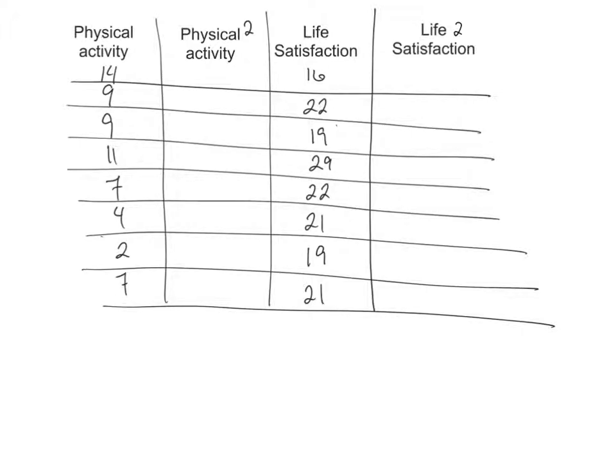Okay, so we have over here in the X variable, we're going to do the physical activities. That's these scores here, so like 14 and 9 and 9, 11, 7, 4, 2, and 7, right?